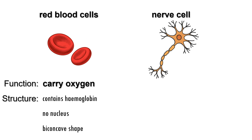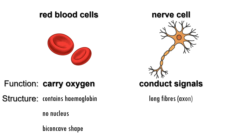Nerve cells have a different shape, and they are specialized for conducting electrical signals to and from the brain and spinal cord. These cells have very long fibers that connect distant parts of the body to the central nervous system, such as the foot and the spinal column. These long fibers help electrical signals to travel efficiently over long distances.